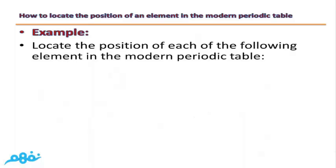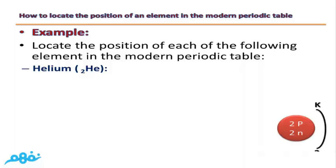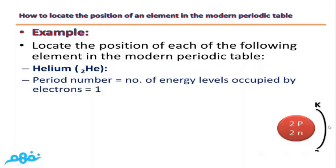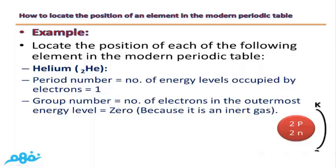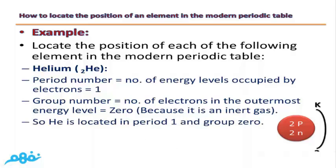Example: locate the position of helium (He, atomic number 2) in the modern periodic table. By writing its electronic configuration, helium contains only one energy level filled by two electrons. Because it has one energy level, it is in period one. Because its outermost energy level K is completely filled, it is located in group zero. So helium is located in group zero, period one — because helium is an inert gas.